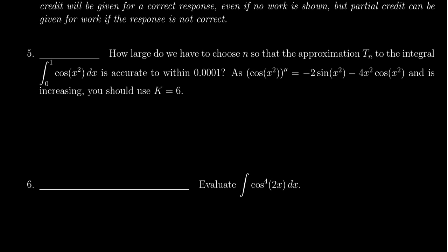We have to determine how large we need to choose the number n so that the approximation using the trapezoidal rule on the integral from zero to one of cosine(x²)dx is accurate to within one ten-thousandth.